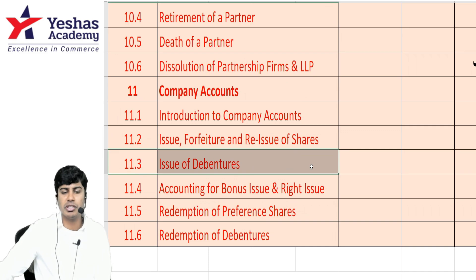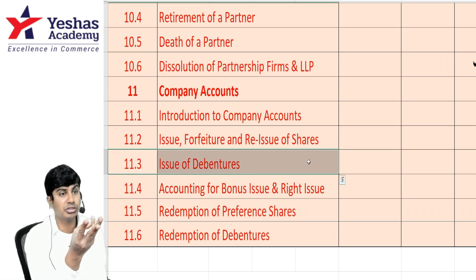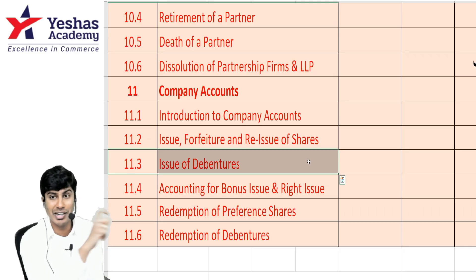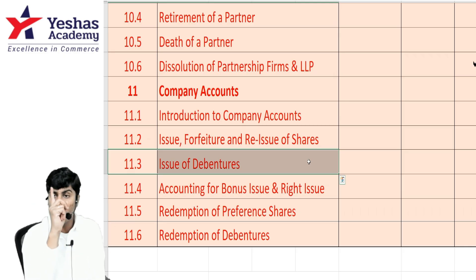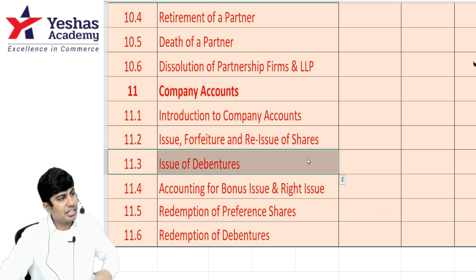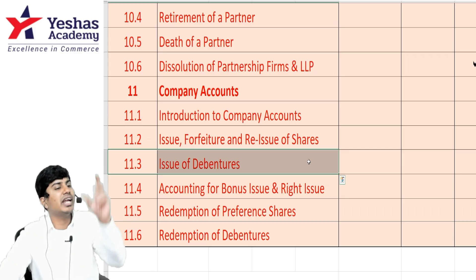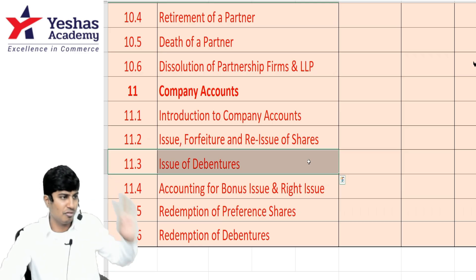For issue of debentures, remember the treatment of premium on redemption and discount on issue together as loss on issue of debentures. Such loss on issue will be debited by transferring to the P&L account — not in one year, but over the period of the debentures. It is not equal every year; it depends on the ratio of outstanding debentures at the beginning of each year.